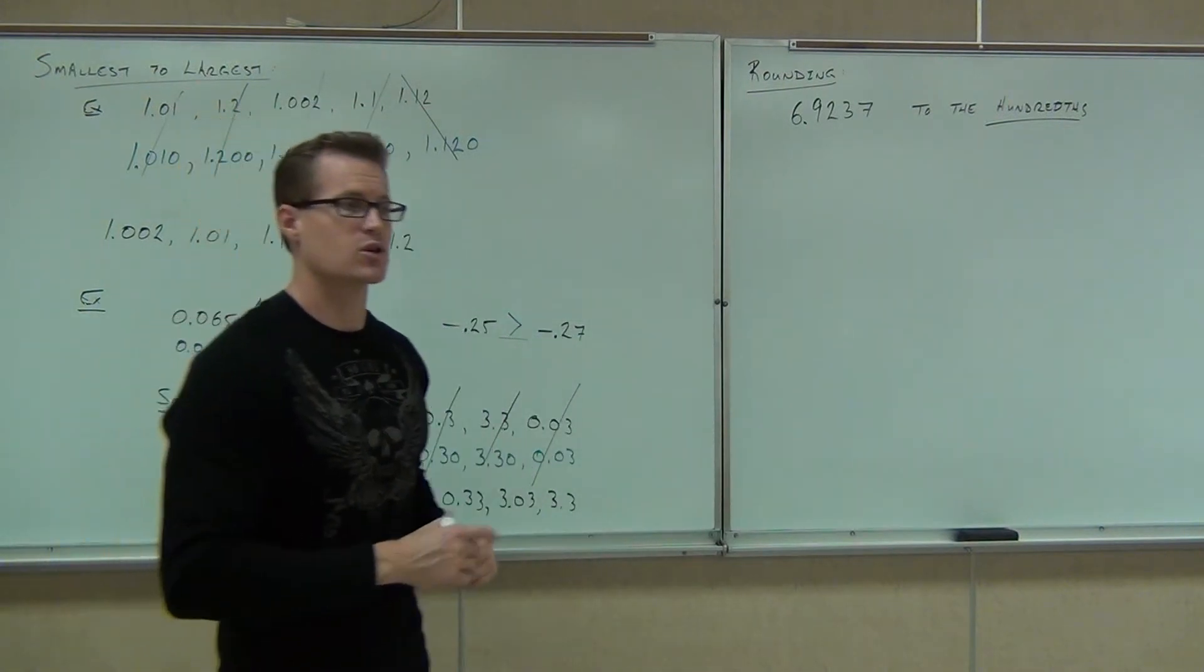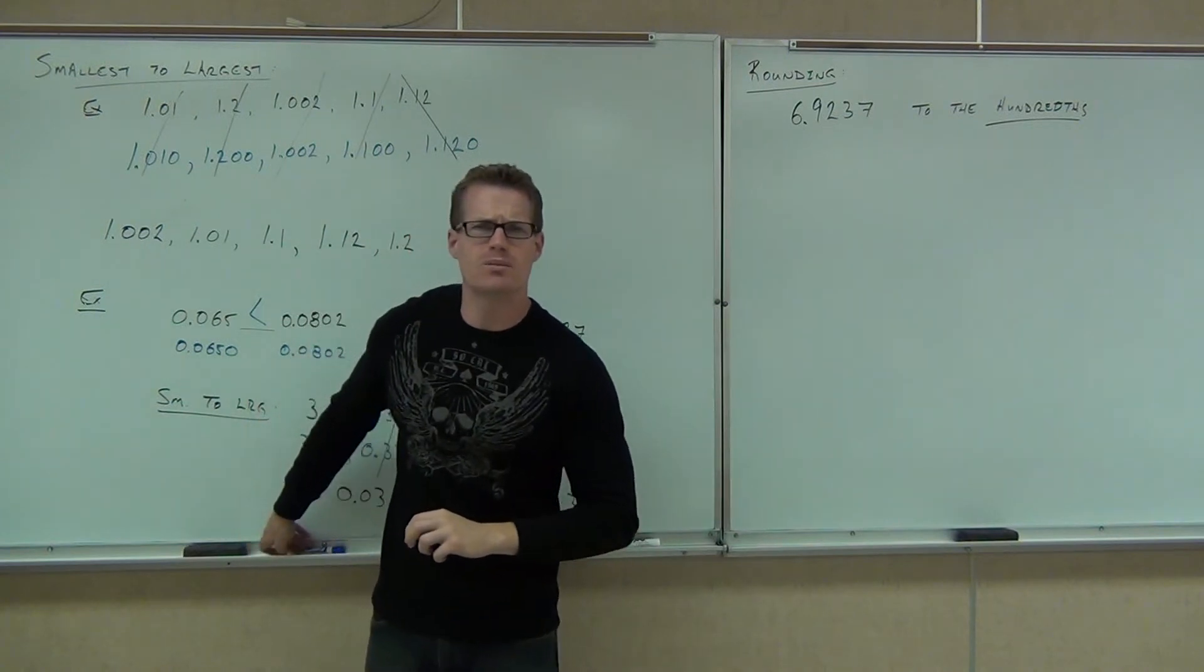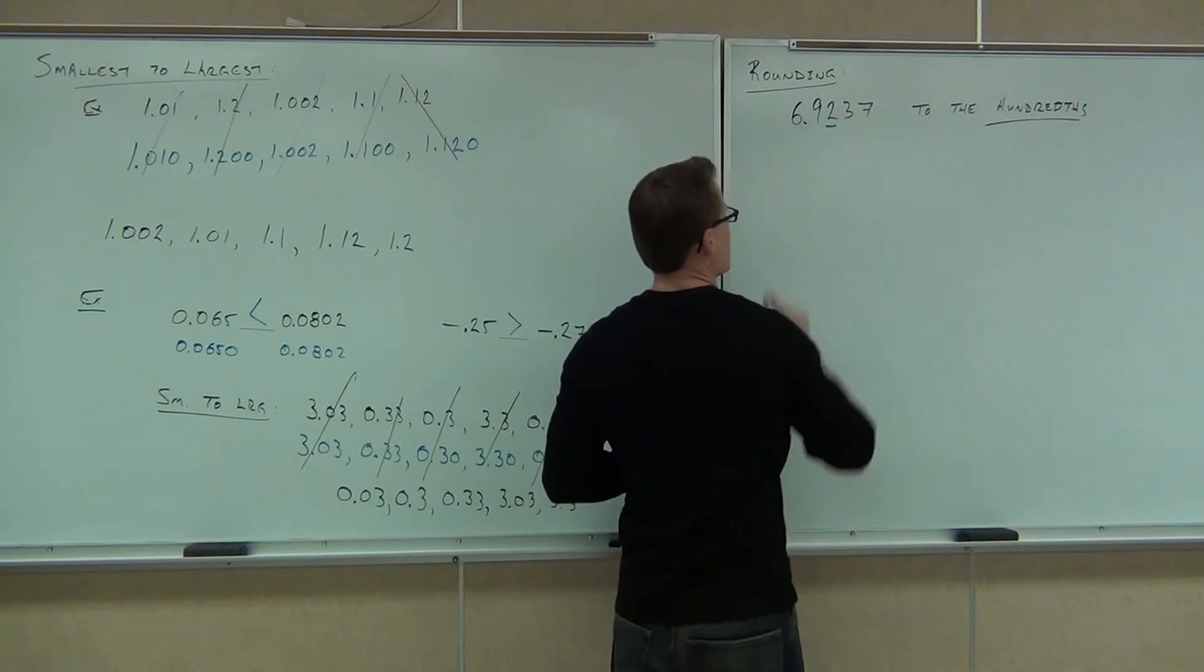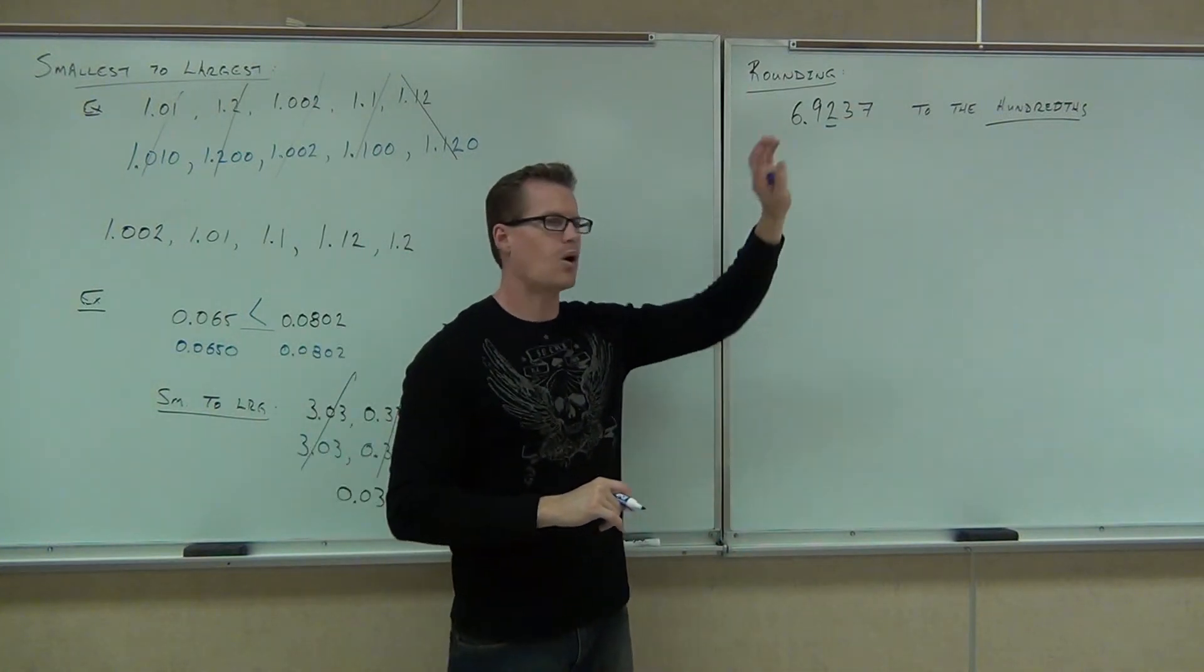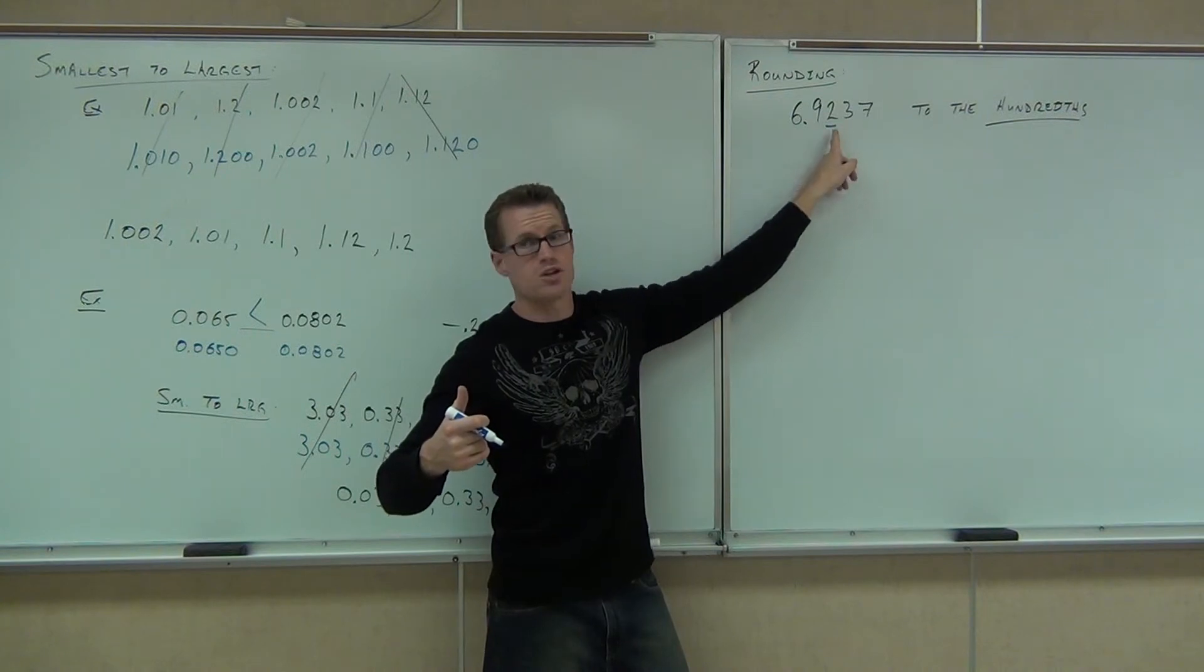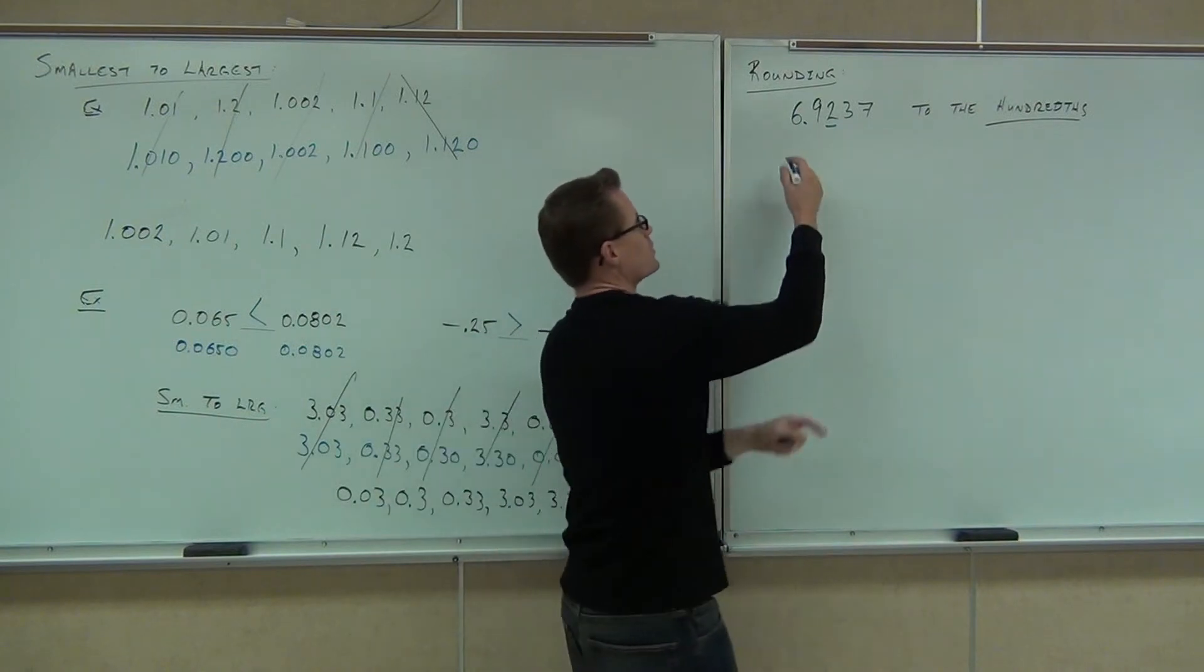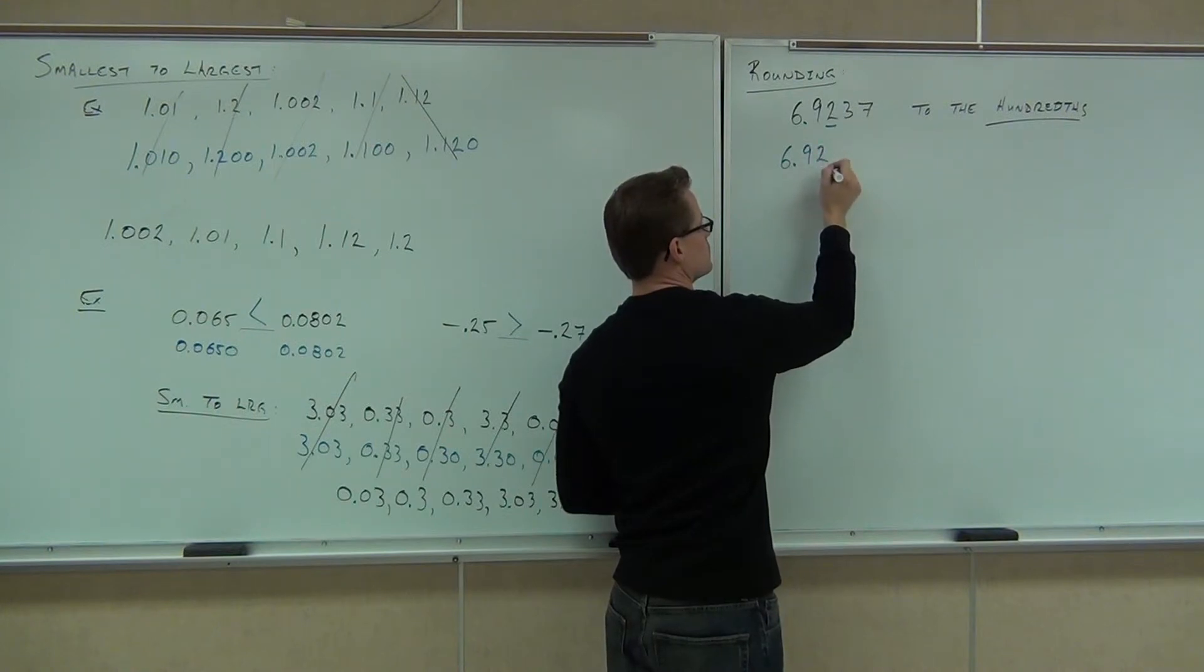We're rounding to the hundredths. So the first thing you do, identify the place value we're rounding to. What number's in the hundredths? Two. So we're going to underline the two. You look at the digit to the right, not all the numbers, just the digit, that means the three. If this number is five or more, you raise this. If this number's less than five, you leave this alone. Are we going to raise the two up or leave the two alone? Leave it alone. So you're going to get 6.92.